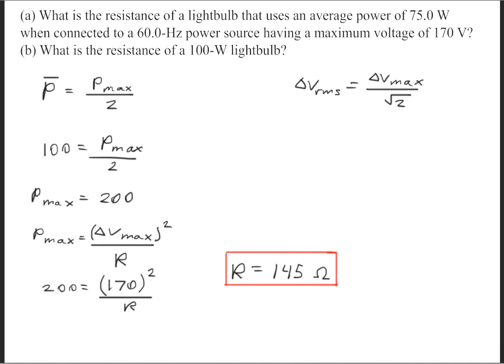For part B, it's more or less the same way in which we will solve the question. Part B is asking what is the resistance of a 100 watt bulb. If you understand how to solve part A, you will do the same techniques and solve part B the same way you do with part A.